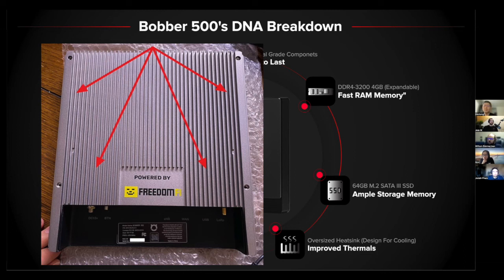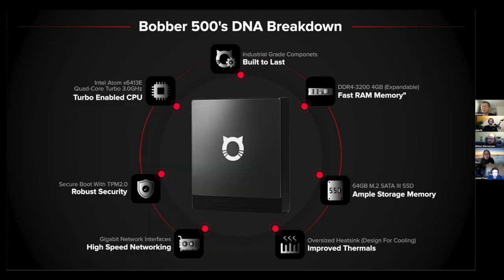The CPU inside uses thermal compound connecting it to a heat sink, which is thermally connected to the back of the chassis — heat generated by components is efficiently transferred to the body of the case and out. So if your Bobber 500 feels hot, that's actually a good sign — it means the device is expelling internal heat. An article on the thermal testing process is coming soon, covering extensive controlled environment testing at 100% load.